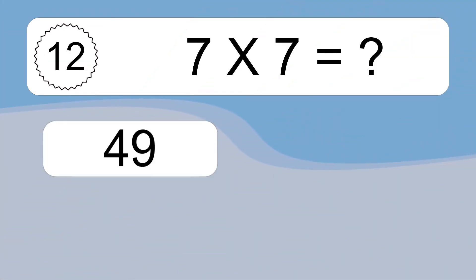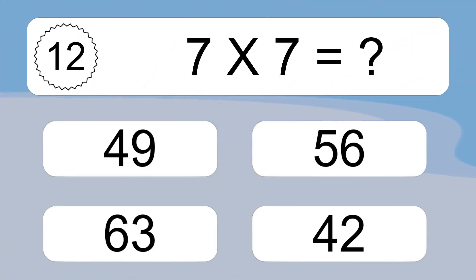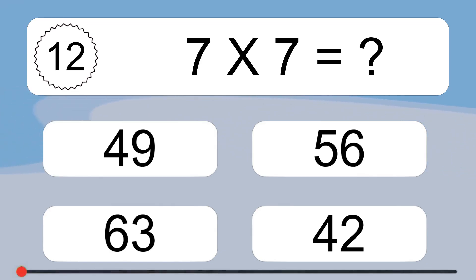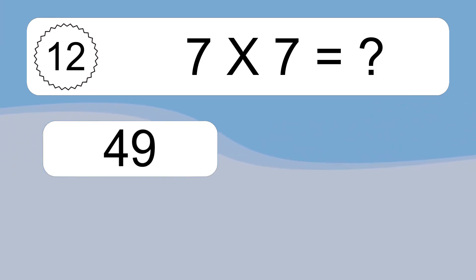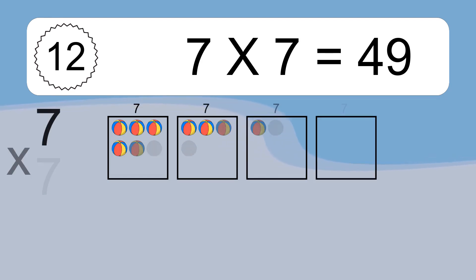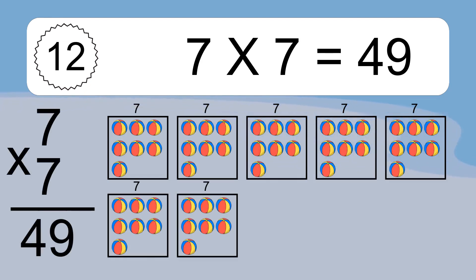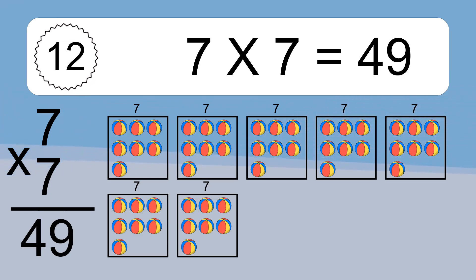7 times 7 equals what? 7 times 7 equals 49. We have 7 boxes, and each box has 7 colorful balls inside. If you count all the balls in all the boxes together, you will have 7 times 7 balls. This equals 49 balls.